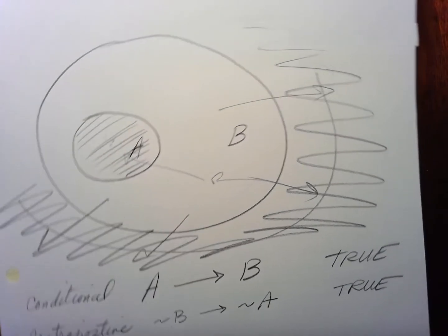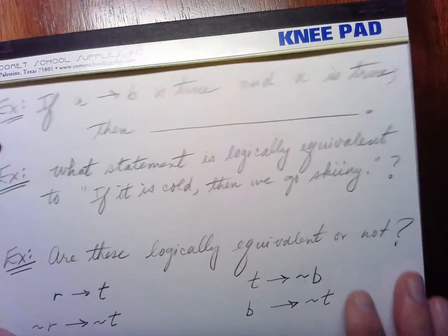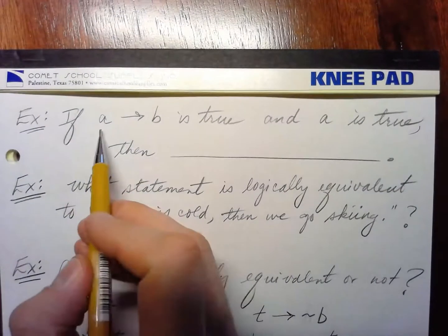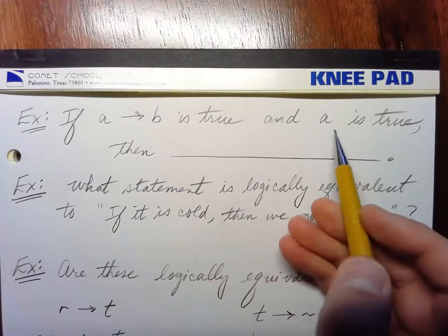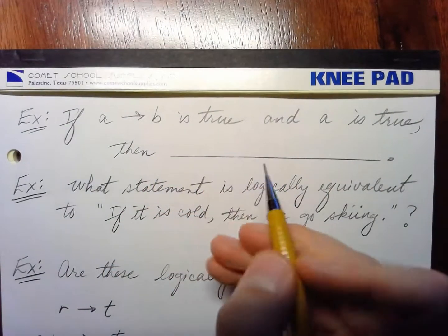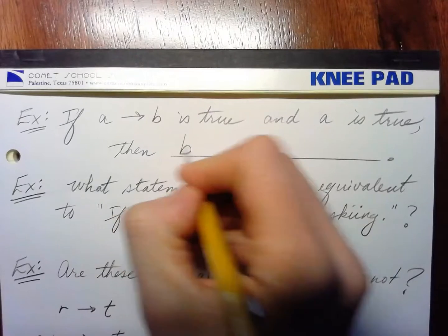That is the diagram for that. Let's go over some examples here. If A implies B is true, then A is true, and A is true, then B is true.